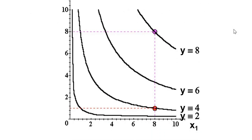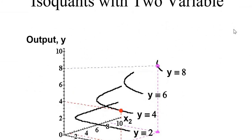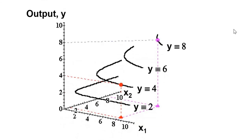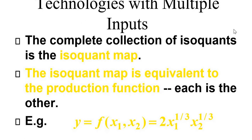There are isoquants shown at output levels 2, 4, 6, and 8. Isoquants are the level curves of output. The complete collection of isoquants is the isoquant map. The isoquant map is equivalent to the production function.